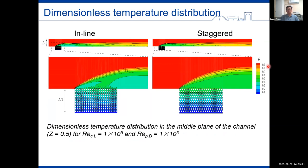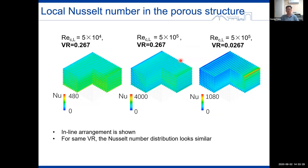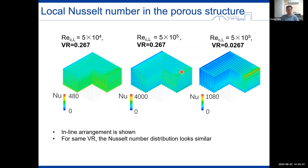Regarding heat transfer, the temperature distribution for different cases and the local Nusselt numbers are also investigated. And based on these simulations, we proposed a correlation for the average Nusselt number, accounting for the pore structure, Reynolds numbers, and also the velocity ratios.